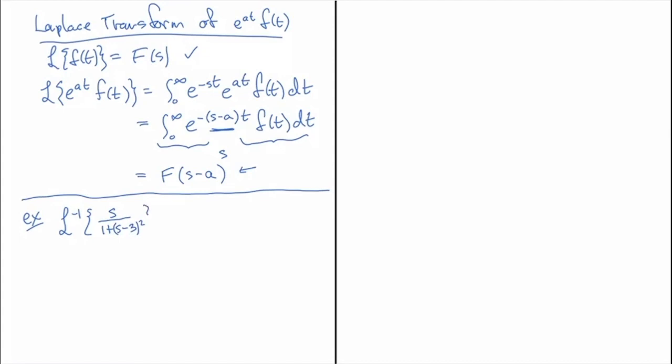So this looks almost like the transform of the cosine function except that there's this s minus three here. So if we could rearrange this so that it looked exactly like the shift of a cosine function, then we